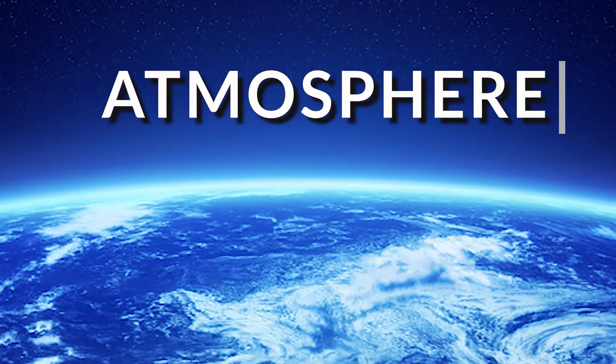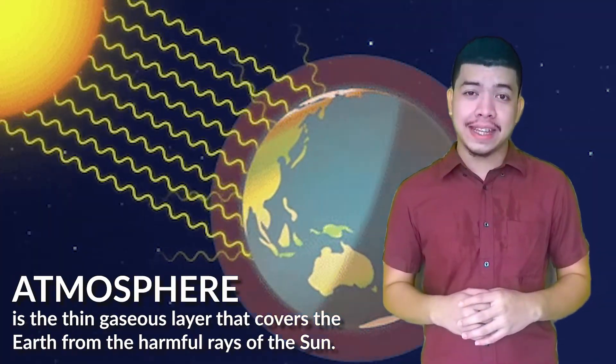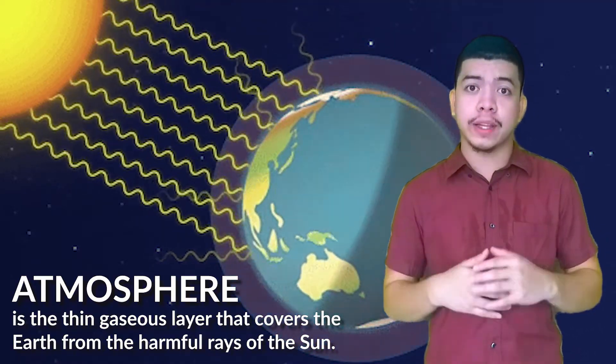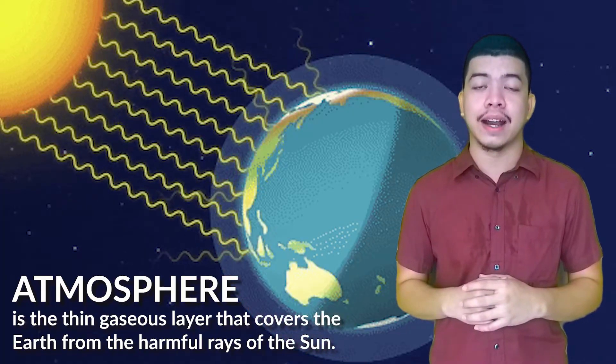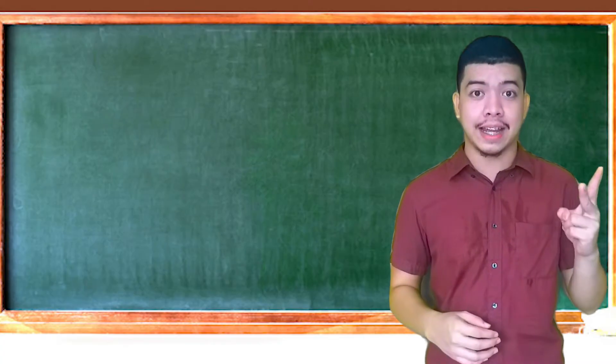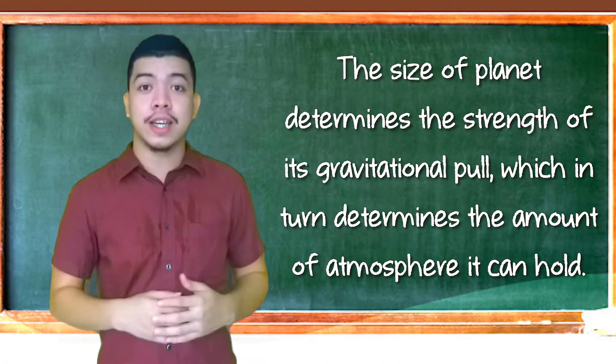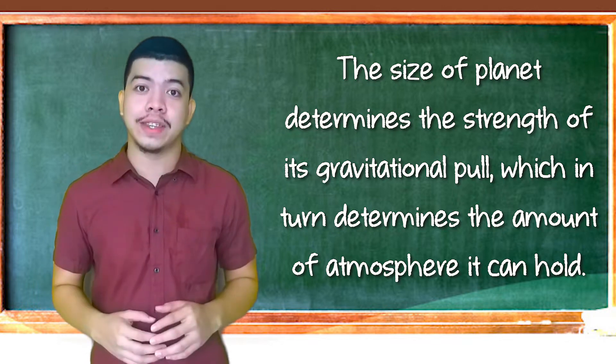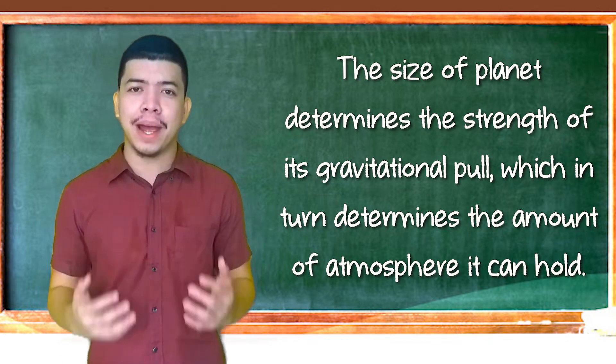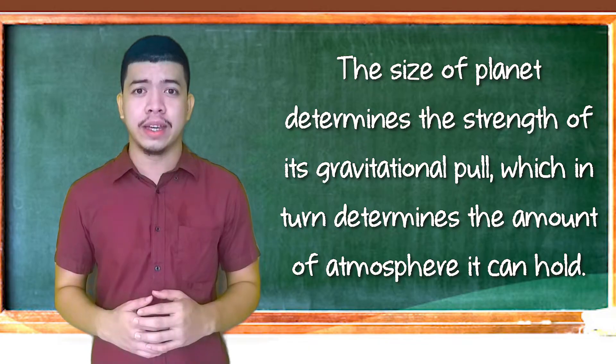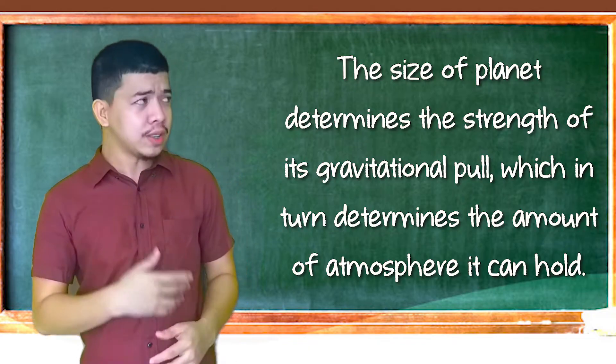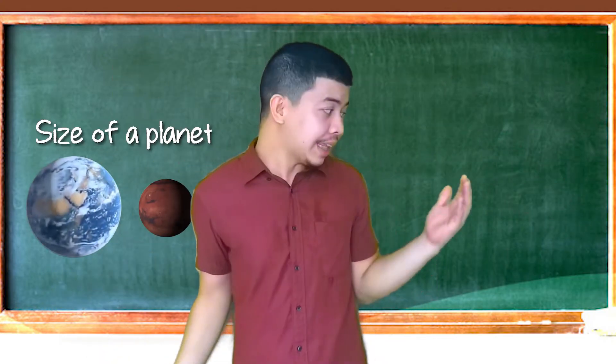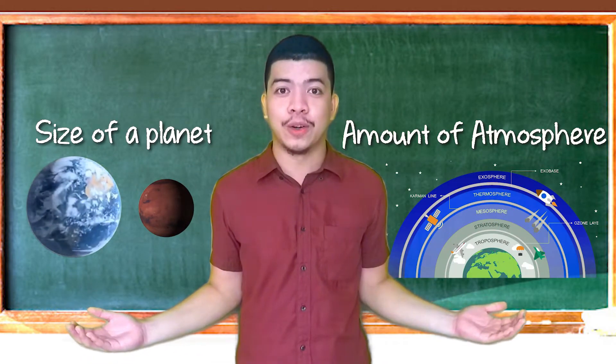Second factor: Atmosphere. Atmosphere is the thin gaseous layer that covers the Earth. Ito yung sapin-sapin na hangin na pumaprotecta sa atin laban sa harmful rays ng araw. Bago tayo magpaduloy ng discussion on this second factor, here is one concept na dapat niyong maunawaan. The size of a planet determines the strength of its gravitational pull, which in turn determines the amount of atmosphere it can hold. Medyo komplikato yung statement. However, itong statement na to simply provides us a relationship between the size of a planet at ang kapal magiging atmosphere nito.